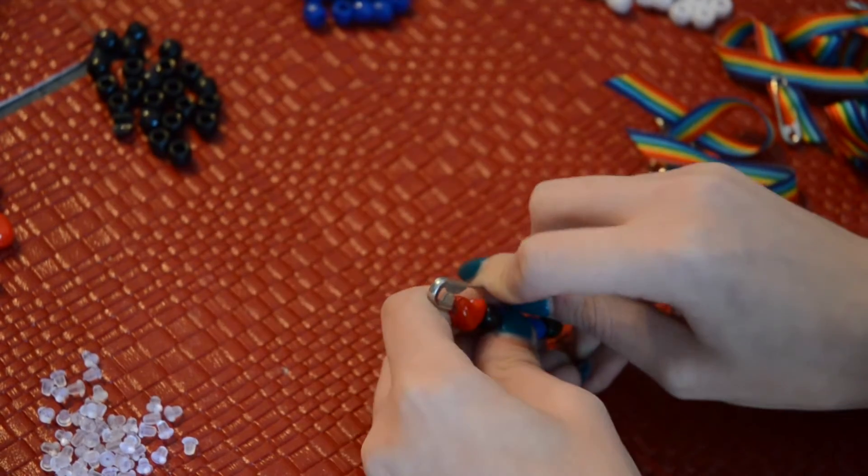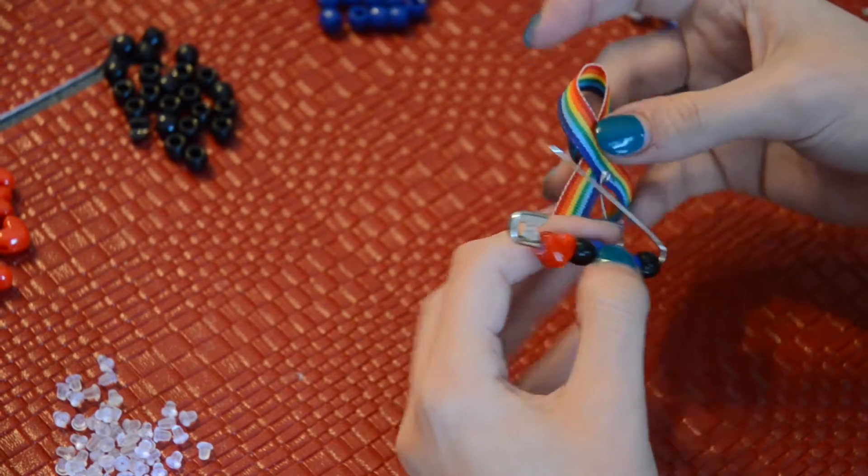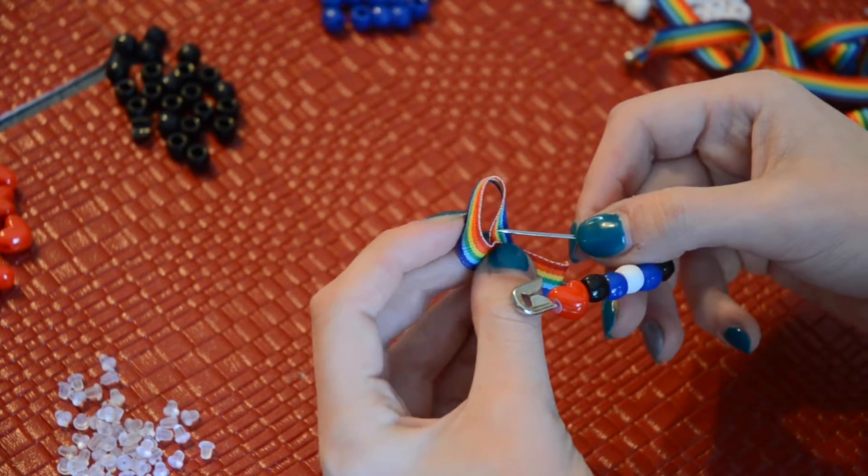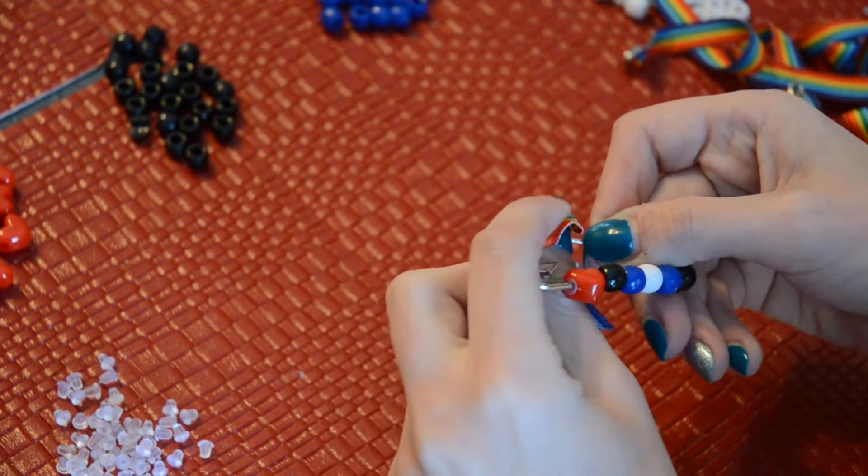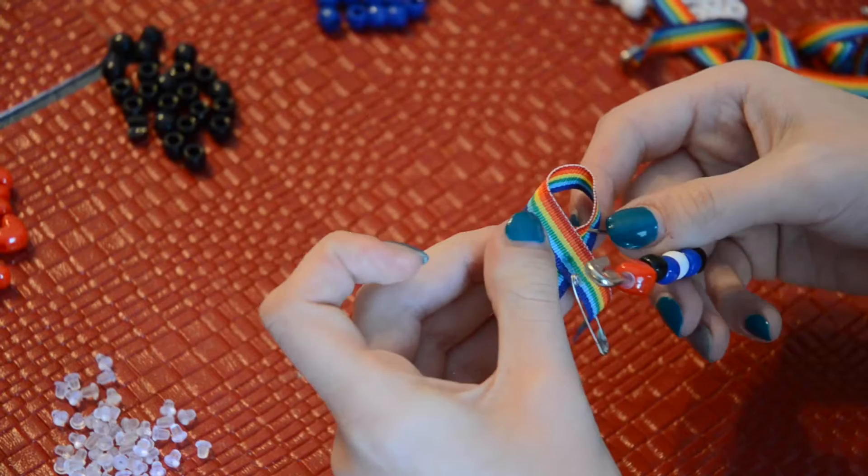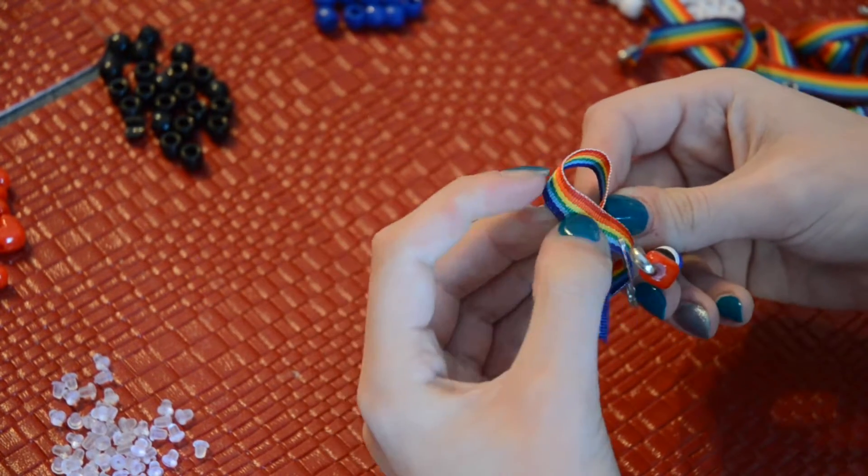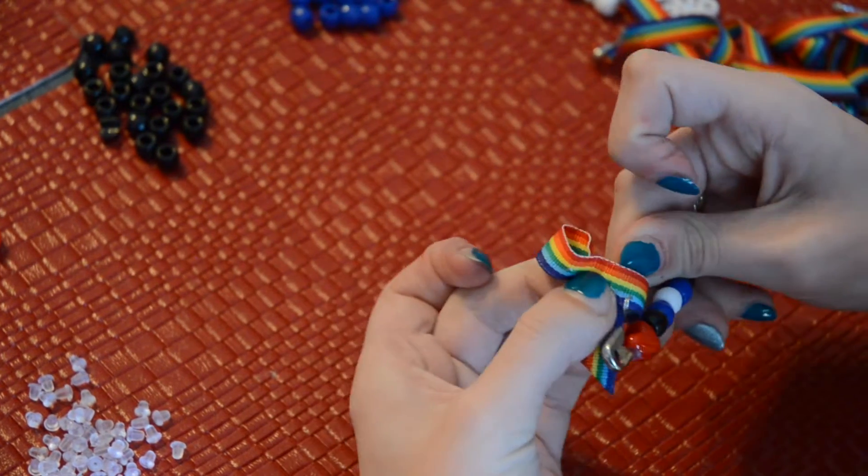And then you take your ribbon, and between the green and the yellow, where it's just one piece of material, you put your safety pin. And these are not real sharp, so it takes a little bit. And then on the other side, you want your ribbon to be fanned out where it looks like the gay awareness ribbon. That's what we want.